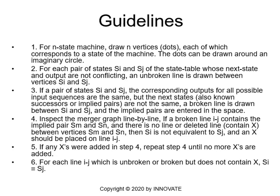Guidelines. One: for an n-state machine, we draw n vertices or dots, each corresponding to a state of the machine. The dots can be drawn around an imaginary circle. Two: for each pair of states Si and Sj of the state table whose next state and output are not conflicting, an unbroken solid line is drawn between vertices Si and Sj — meaning they are equivalent states.